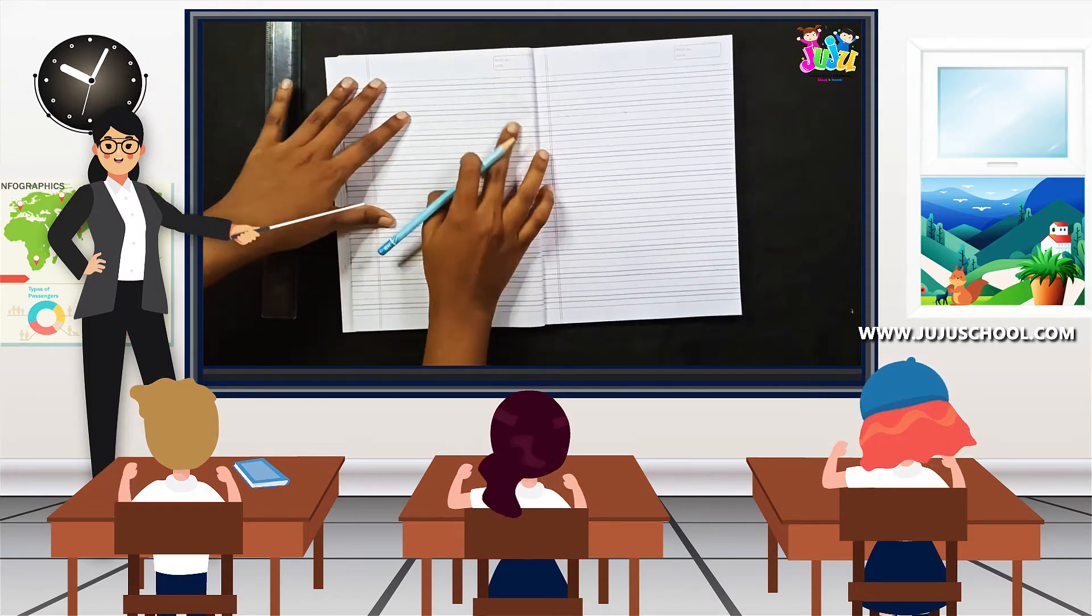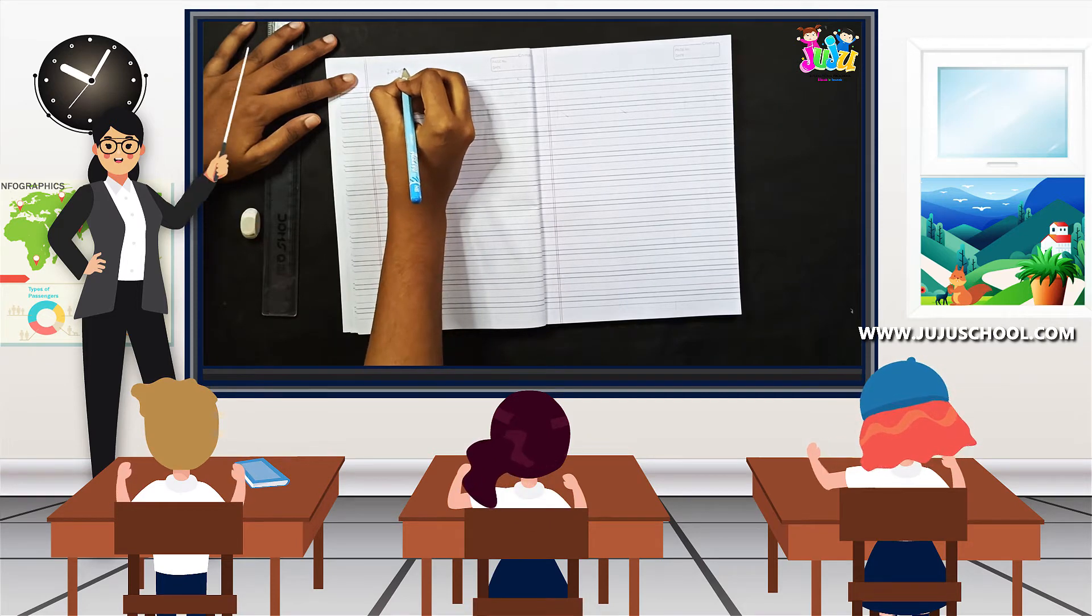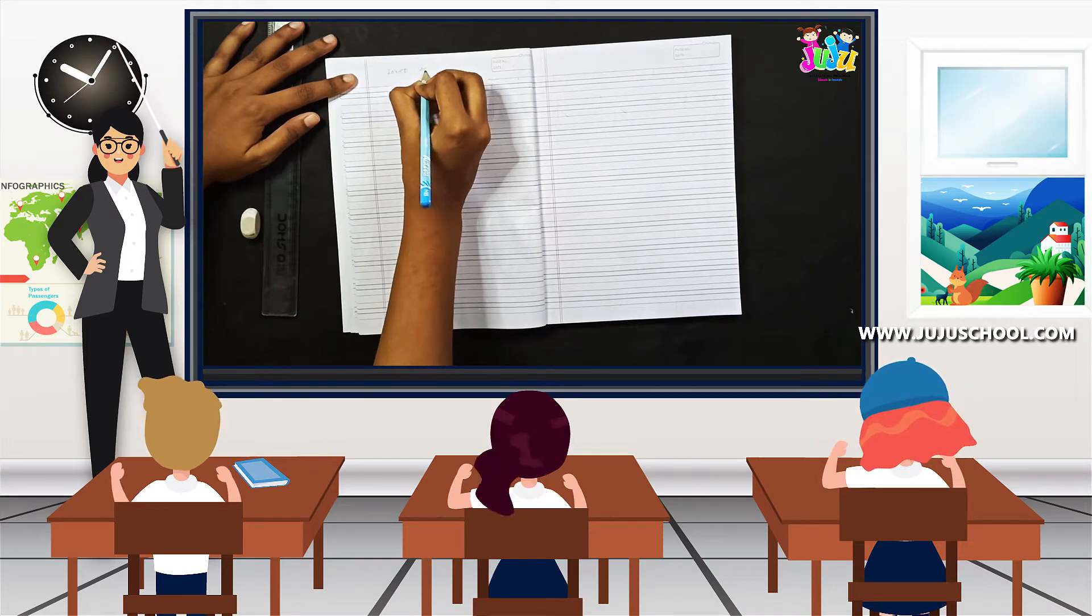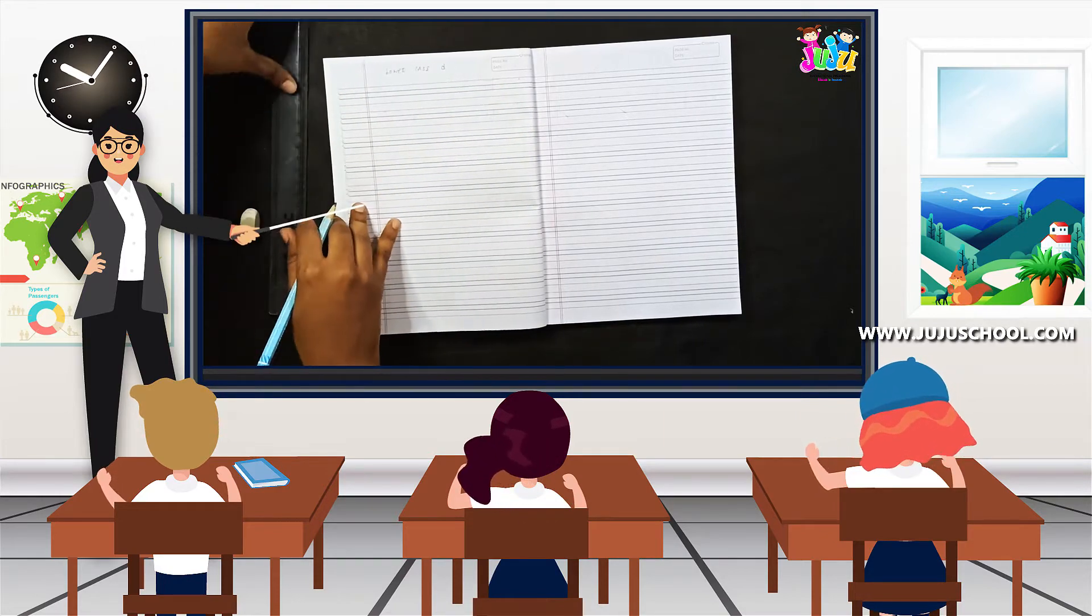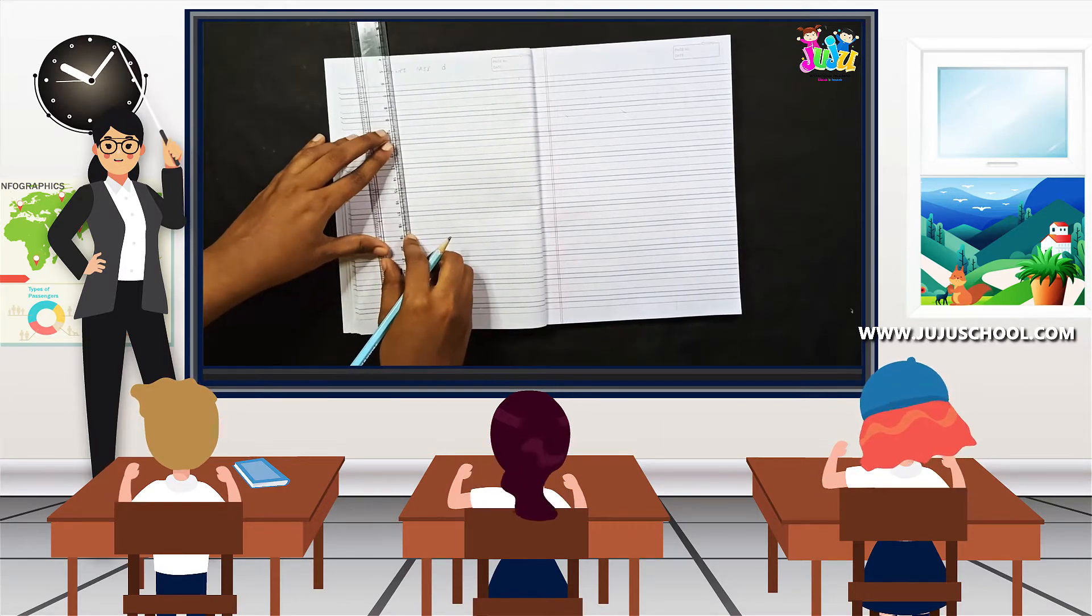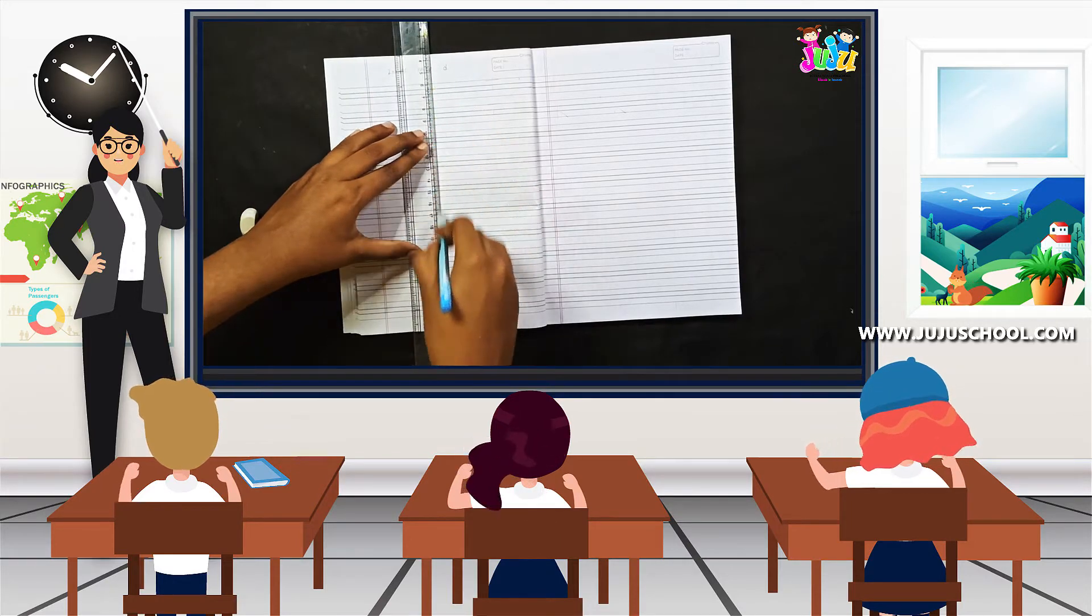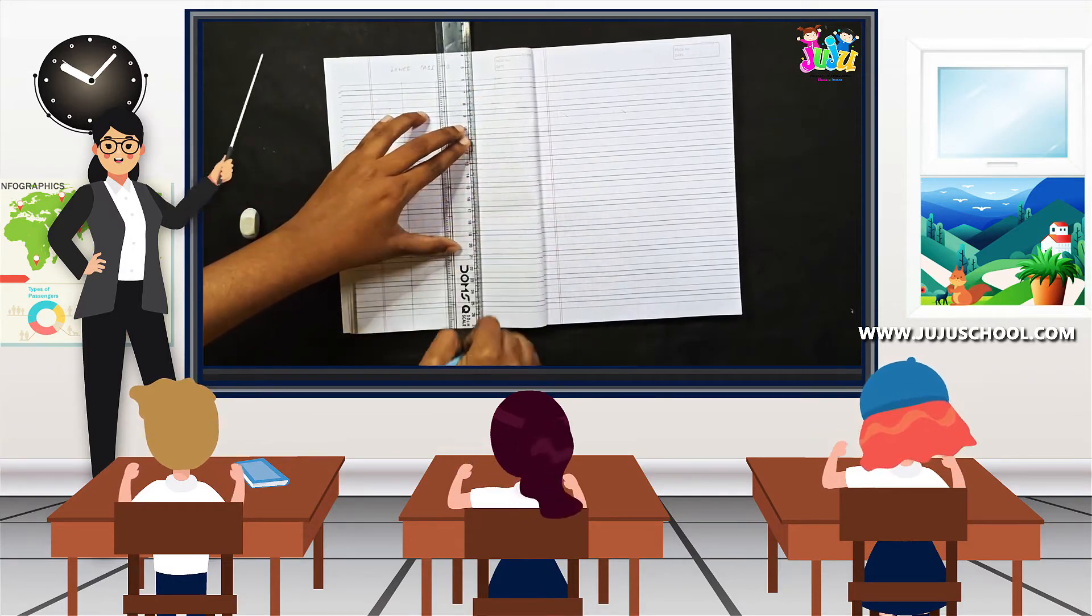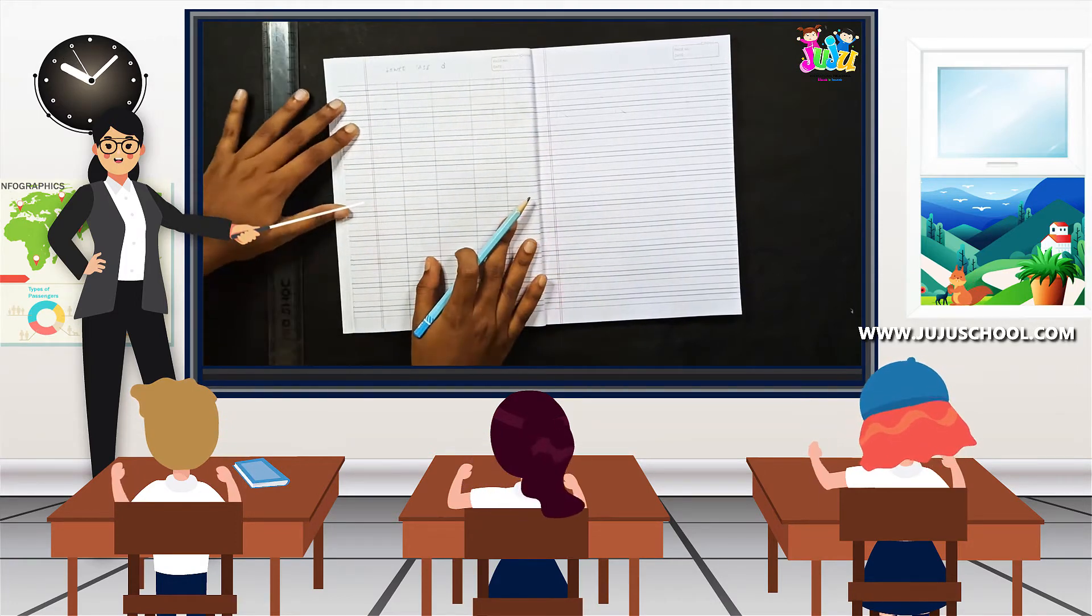So the very first thing you have to do is write today's date and heading as lowercase d. Now I am going to divide this page into five equal parts: one, two, three, four, and five. So now I have divided into five equal parts.